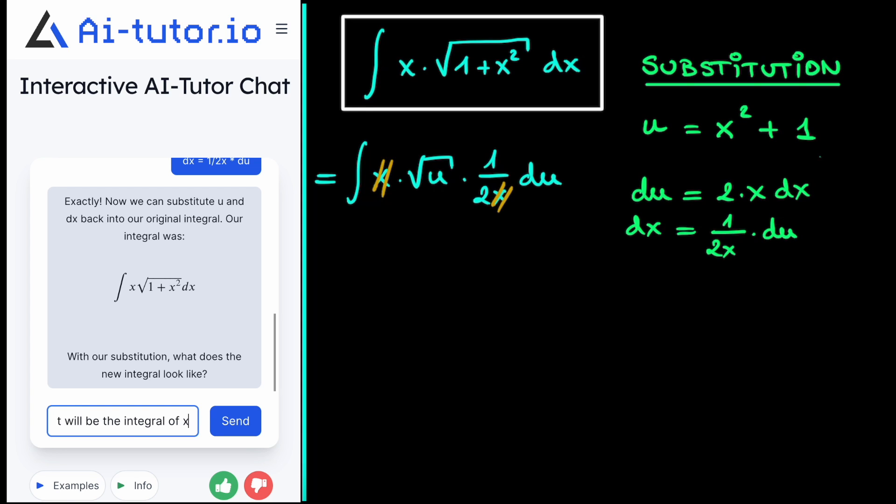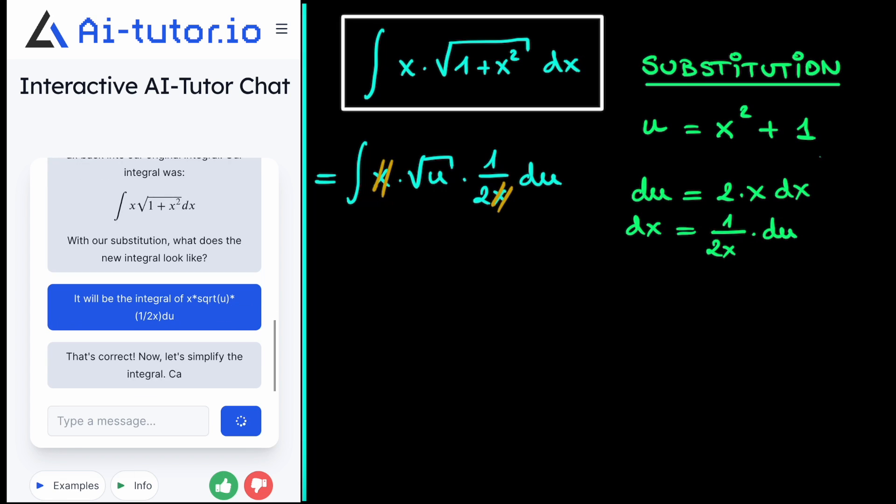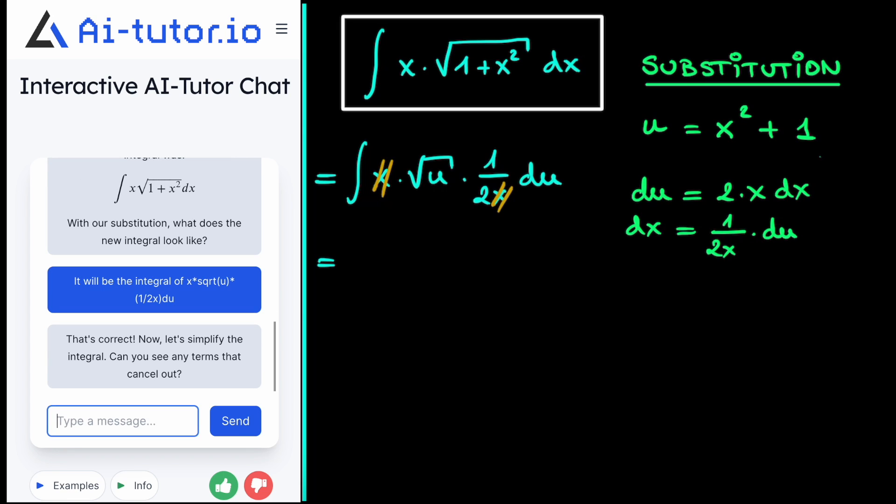And indeed, if we tell the AI tutor what we found, then it will say that we can indeed simplify our integral by cancelling out this x. So then we get that our original integral is equal to 1 half times this following integral, the simplified integral of the square root of u du. So now if we tell the AI tutor that we found that our integral becomes this integral of the square root of u du, it will say that that is indeed correct.